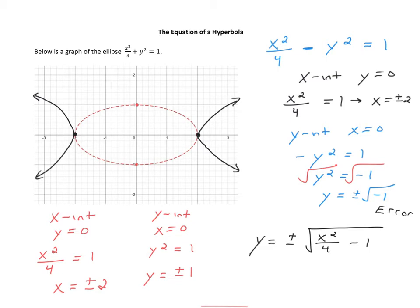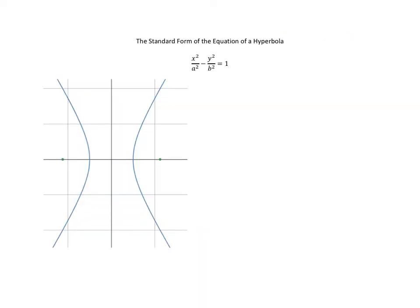Let's look more carefully at this and talk about the standard form of the equation of a hyperbola. The standard form is very similar to that of an ellipse, but with a negative sign instead of a plus sign. When you try to find values between the two pieces, none exist because you'll get a negative under the square root when solving for y. The two separate pieces come from the positive and negative square roots of the equation.